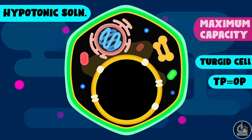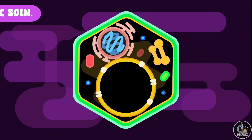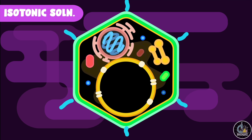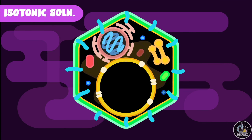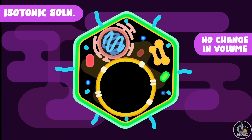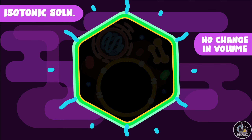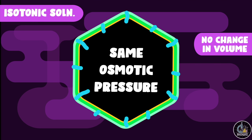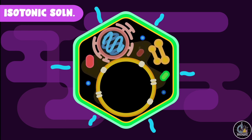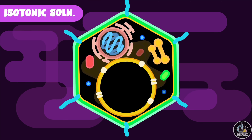Here, the value of turgor pressure becomes equal to osmotic pressure. Now, if we place the plant cell in an isotonic solution, there will be no change in the volume of the cell as the osmotic pressure of both the cell and the solution is the same. So the net exchange of water between the cell and the solution will be zero.